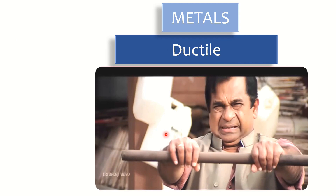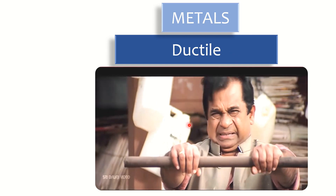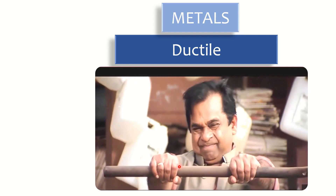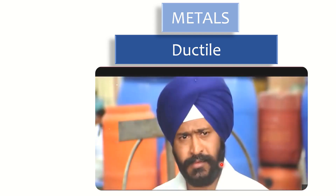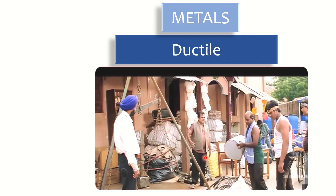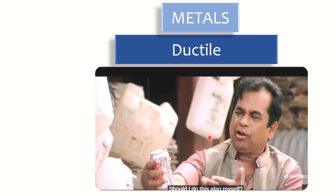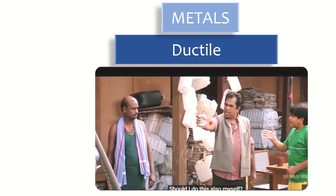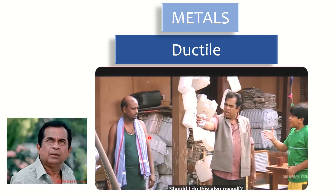Coming to elongation properties — metals are ductile. Ductile means the property that can be bent without any fracture when we apply any force on it. It should bend without any fracture. When we apply force on metal or metal alloys, it is getting bent but not fractured.